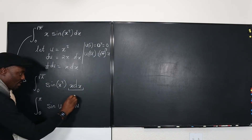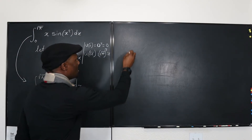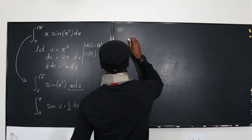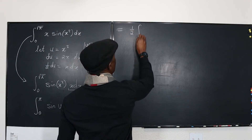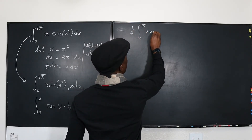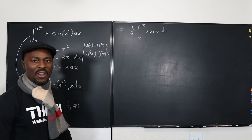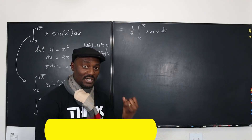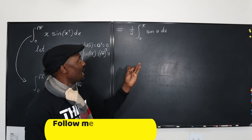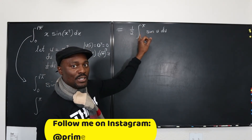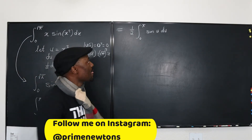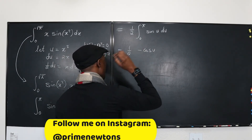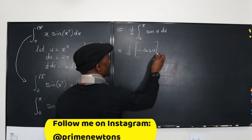Moving the one half to the front, this becomes one half of the integral from zero to pi of sine(u) du. Can you integrate this? Absolutely. The simplification is clear — the main challenge was deciding what u should be and what the new boundaries are. The integral of sine(u) is negative cosine(u), evaluated from zero to pi.